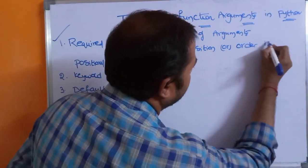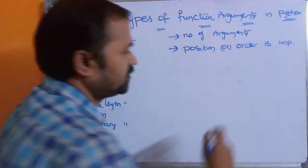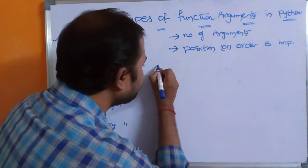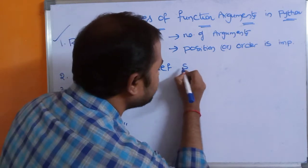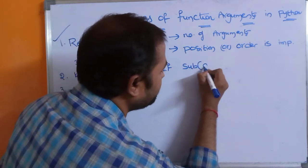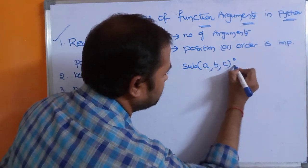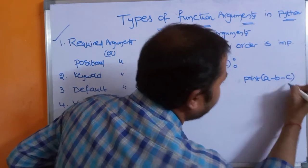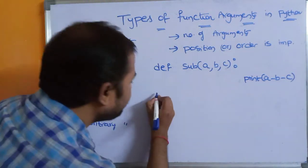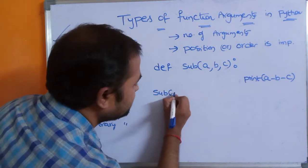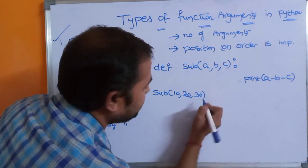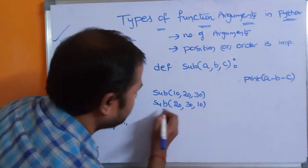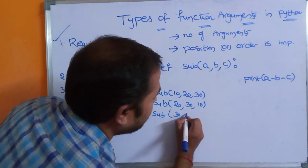The second point is that position or order is important. Let's take an example. Let us define a function: def sub(a, b, c). Inside the function, print(a minus b minus c). Then we call the function three times: sub(10, 20, 30), sub(20, 30, 10), and sub(30, 20, 10).